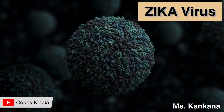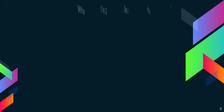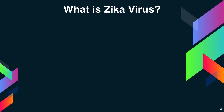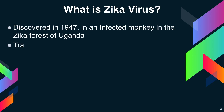Hello friends, today I'm going to discuss about Zika virus. Zika virus was discovered in 1947 in an infected monkey in the Zika forest of Uganda. It is mainly transmitted by Aedes aegypti mosquitoes.